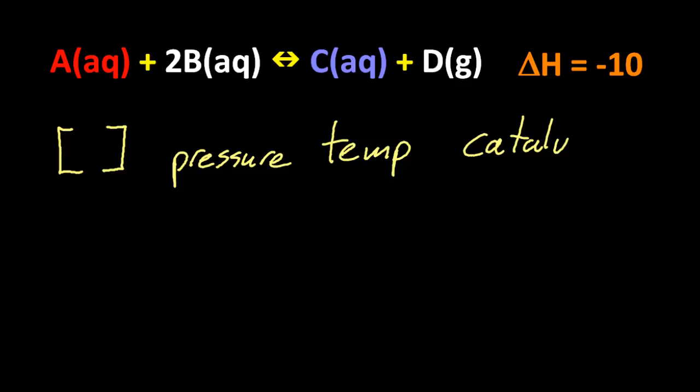So here's a sample equilibrium: concentration, pressure, temperature, and the addition of a catalyst. Well, actually that's the next assessment statement. Those are what we call stresses on an equilibrium. So let's take them one by one.